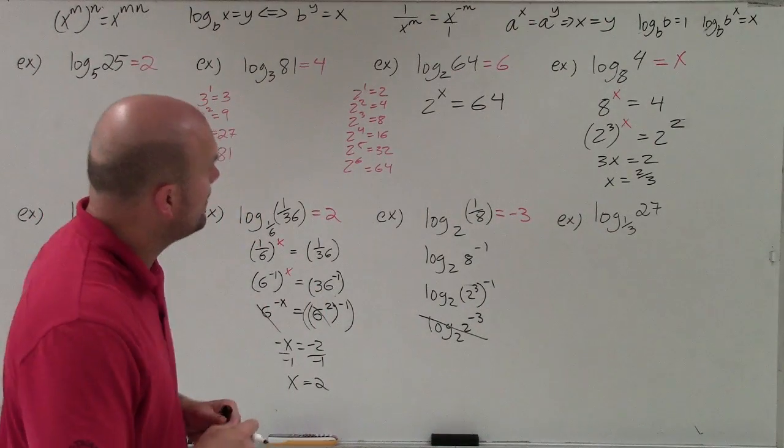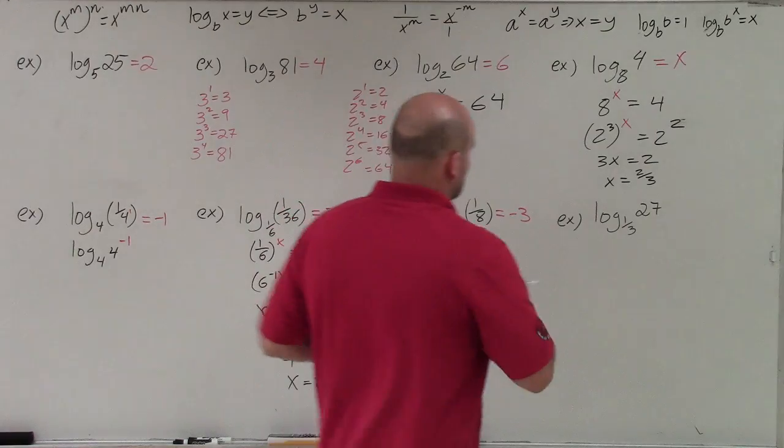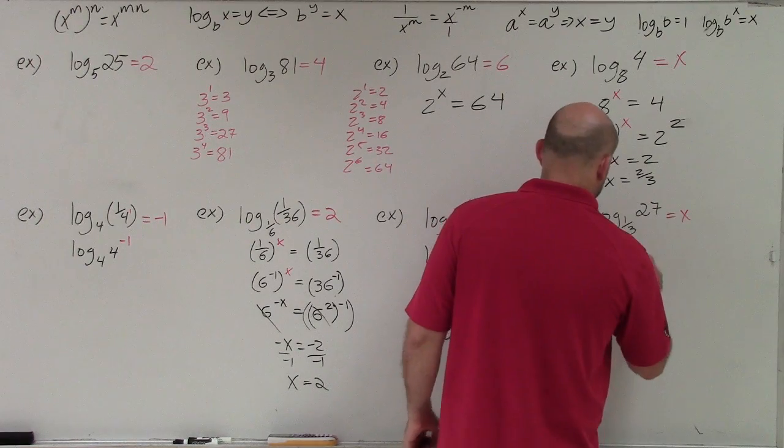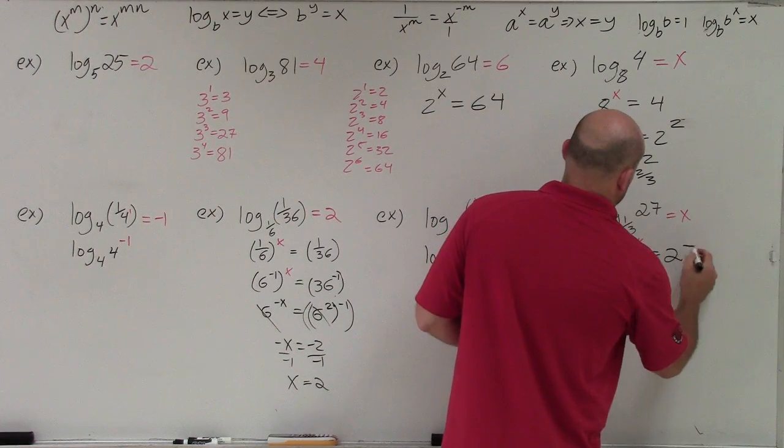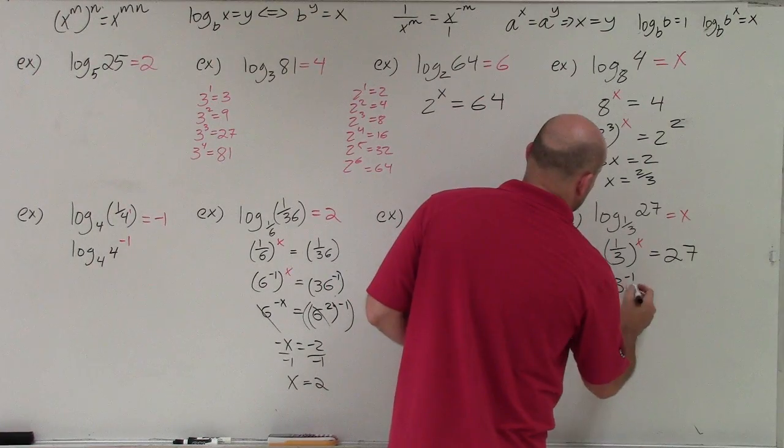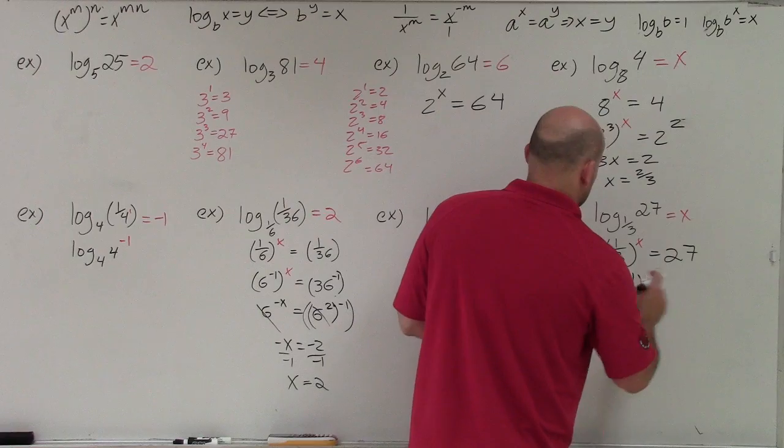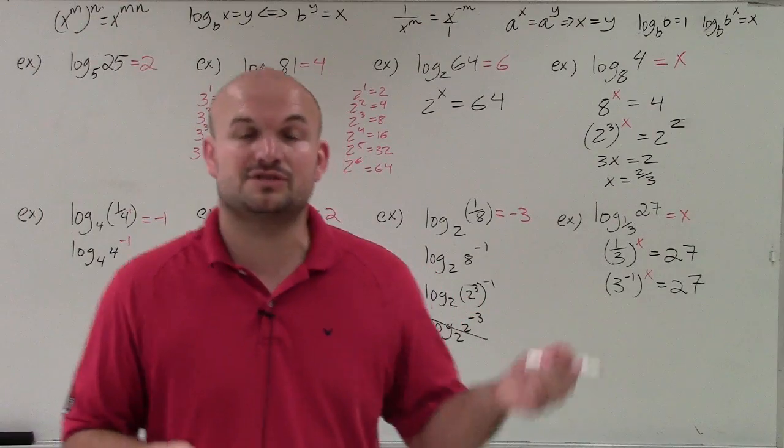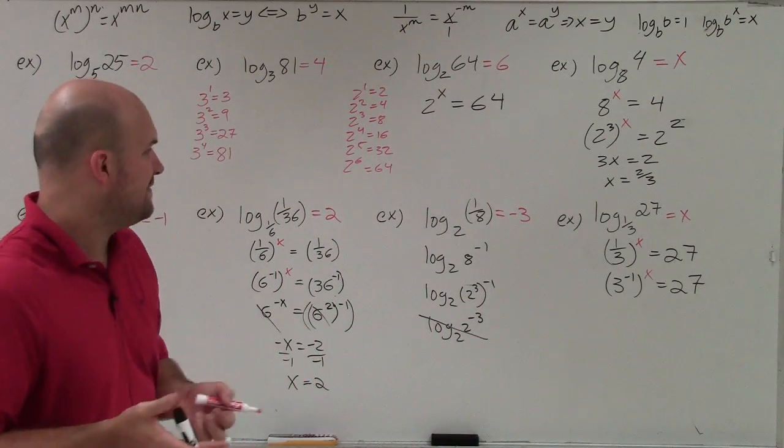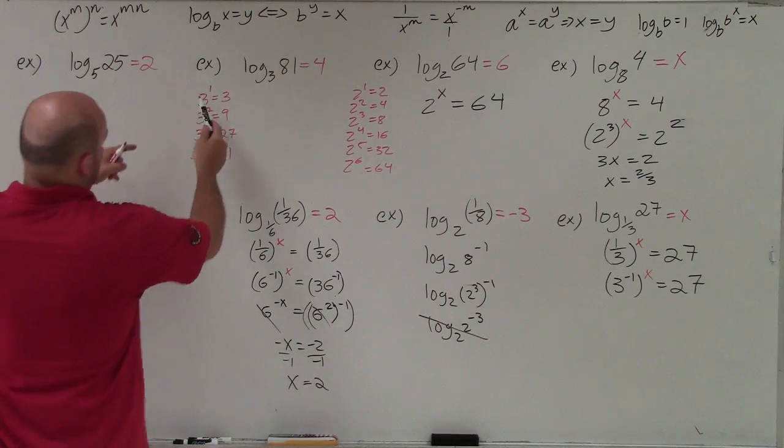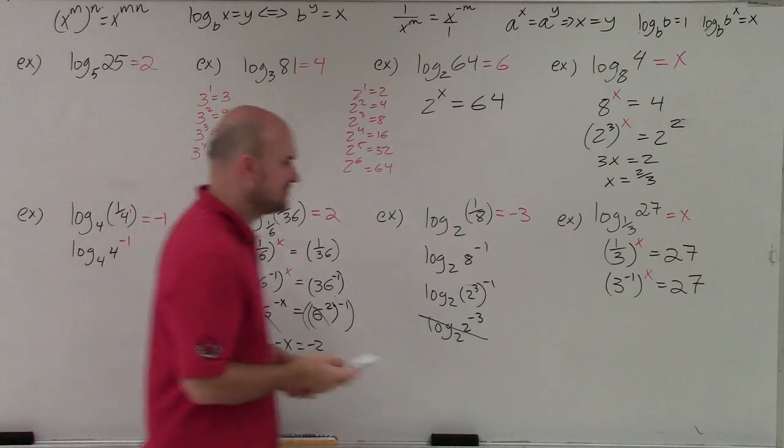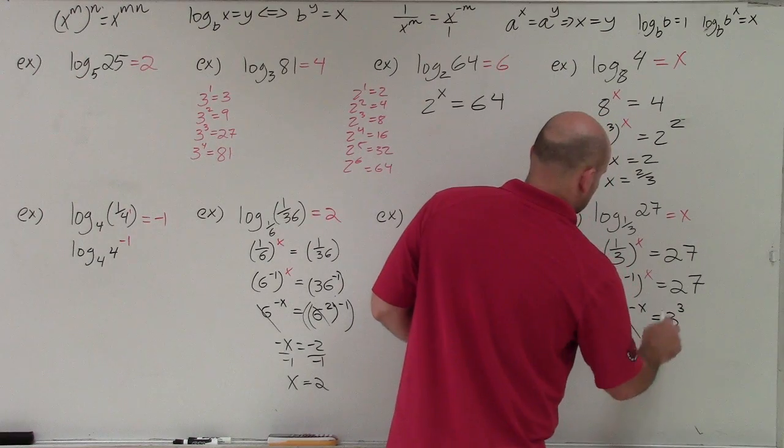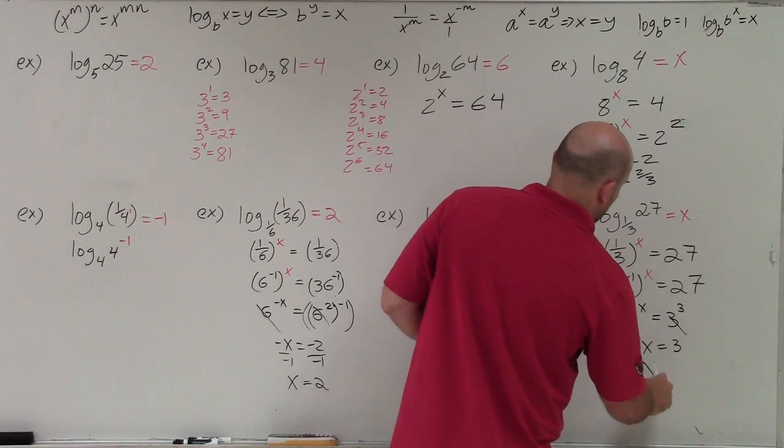And last but not least, I have log of 1 third raised to the 27th. Again, what I would do in this case is I would set this equal to x, and I'd rewrite it as an exponential equation. Then I'd use my negative powers, 3 to the negative 1, x equals 27. Then what I want to do is I say, can I rewrite 3 raised to 3 as, can I have 3 and 27 with the same base? And yes, 3 to the first power is 3, 3 to the third power is 27. So therefore, I just need to rewrite 27 as 3 cubed. So therefore, negative x equals 3, x equals 3.